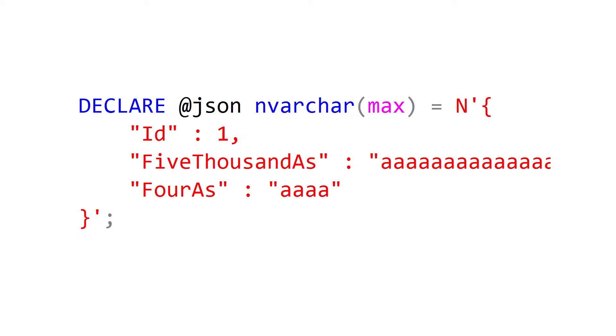It was like more than 5,000 characters in this example I'm showing on the screen. It's the '5,000 A's' property, which as you can guess has 5,000 letter A's. And the problem I was having is I was extracting this value and inserting it into a table, but I saw that the value that was getting inserted in my table was null.